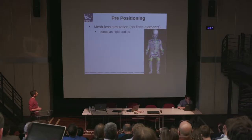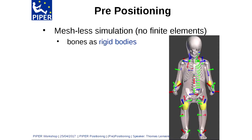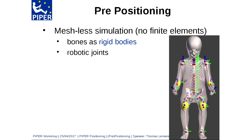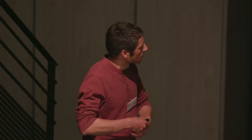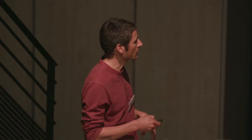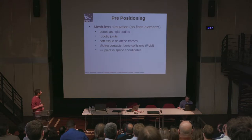In the Piper application, we have your model with the skin and bones. For positioning, we only need to simulate the bones as rigids, which is the first set of degrees of freedom of our system. We then impose some kinematics through robotic joints, which is generally what people use. To better simulate soft tissue deformation, we also use affine frames — affine transformations with 12 parameters — which locally represent affine transformations in space depending on surrounding degrees of freedom.